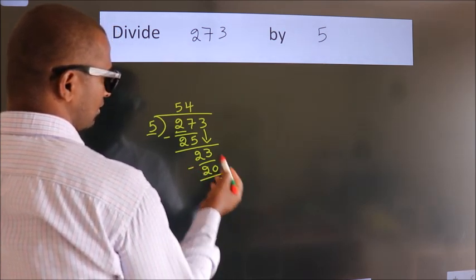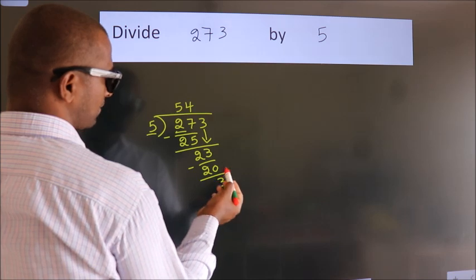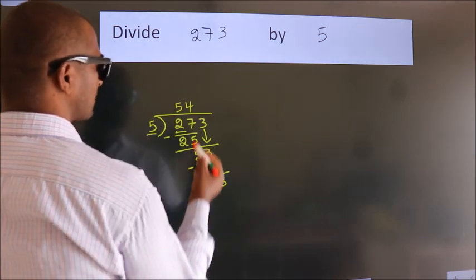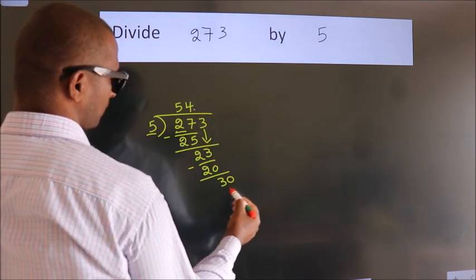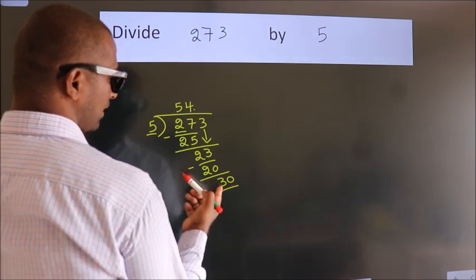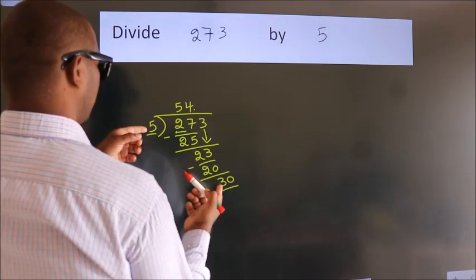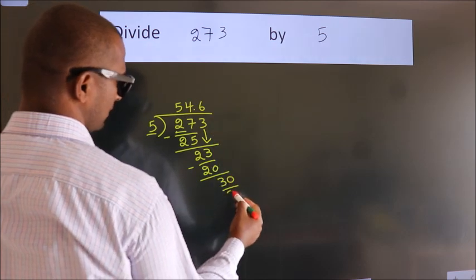After this, there are no more numbers to bring down. So what we do is put a dot and take 0, giving us 30. When do we get 30 in the 5 times table? 5 times 6 is 30.